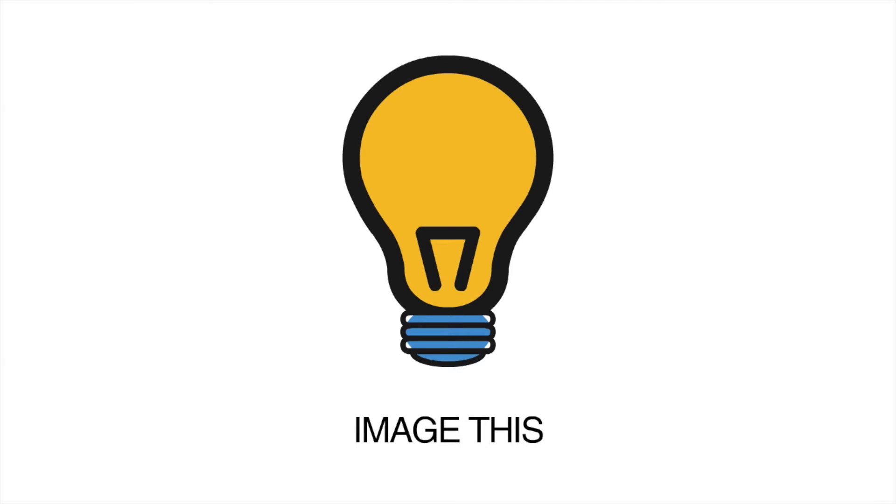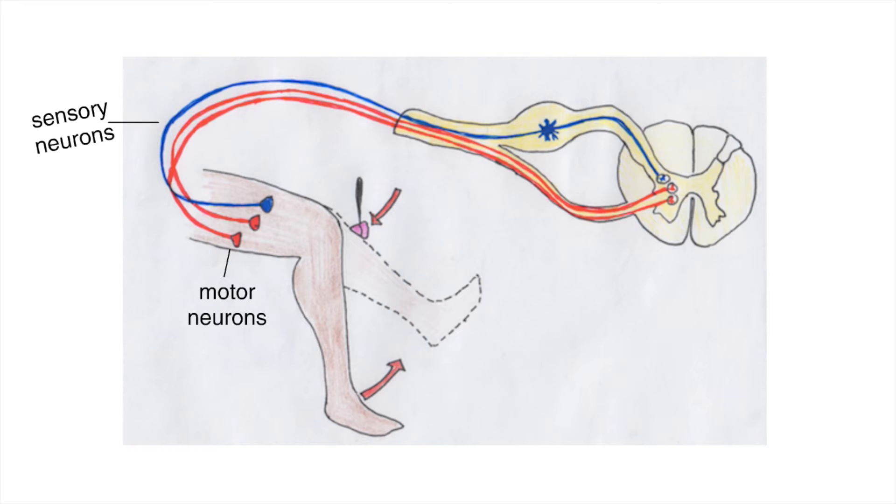So imagine this. If someone taps you on the knee, your sensory neurons will be stimulated and will fire action potentials. These signals will be carried to the spinal cord, where they will connect with motor neurons. Because the signals from the sensory neurons are excitatory, the motor neurons will also fire action potentials, causing your knee to jerk.